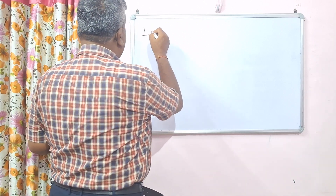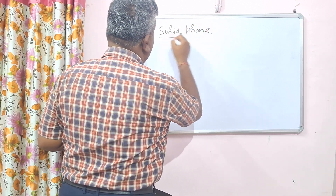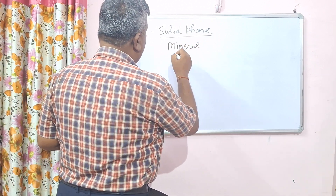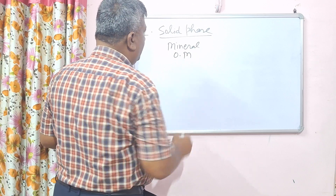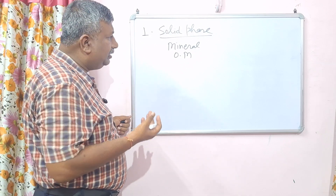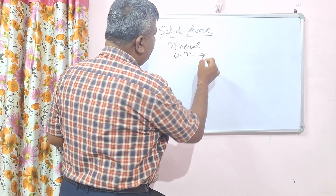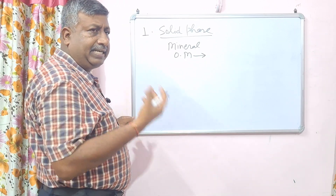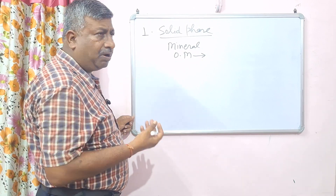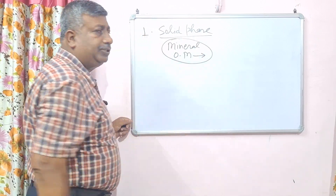The first one is the solid phase. This phase consists of mineral matter and organic matter. There are different types of minerals — primary minerals and secondary minerals — and these are generally categorized as sand, silt, and clay. Organic matter consists of dead and live material such as plant residue, animal residue, microorganisms, and humus.